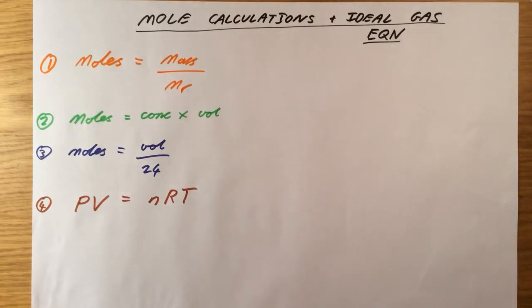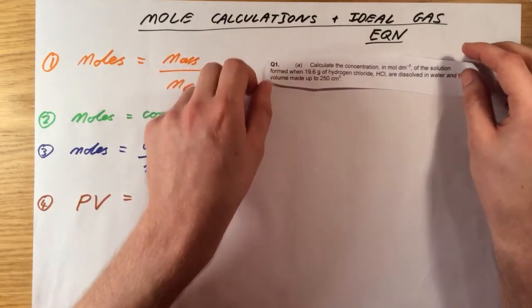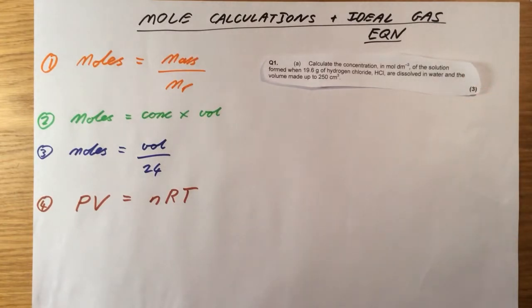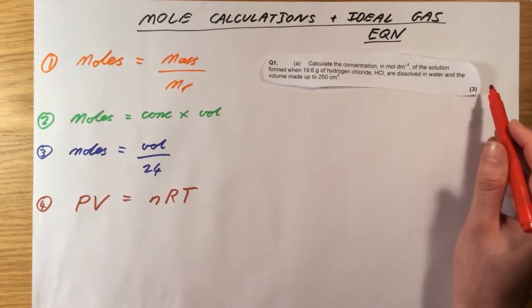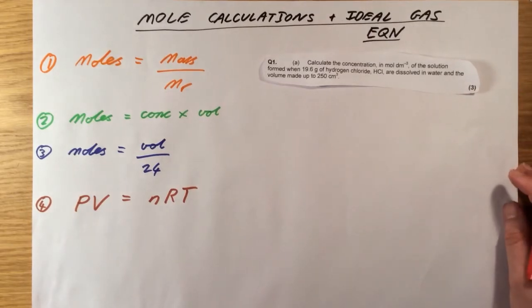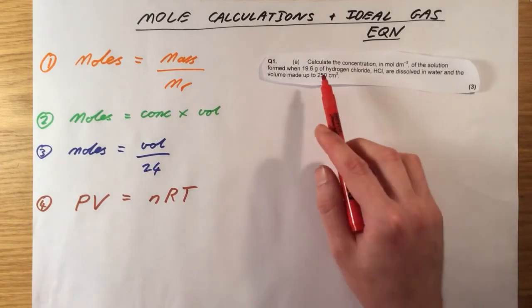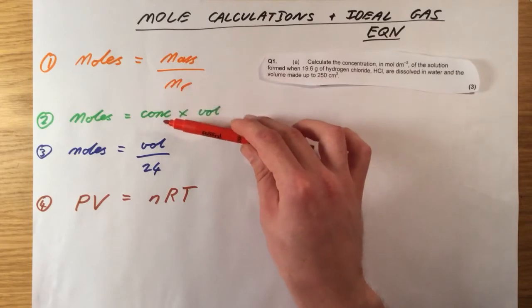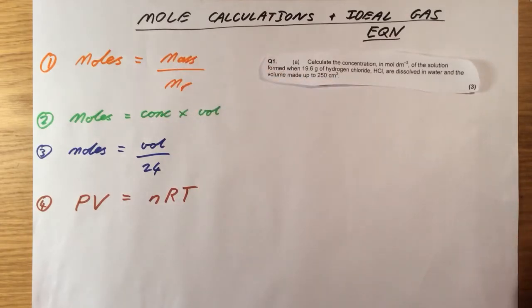Okay, without further ado, let's go through some questions. So our first question here: calculate the concentration in moles per decimeter cubed of the solution formed when 19.6 grams of hydrogen chloride are dissolved in water and the volume made up to 250 centimeters cubed. So the first thing we need to spot here is the number of marks. It's actually a three-mark question. And what that implies to me is it's not going to be a straightforward, simple, single calculation. So what have we got? We've got a mass of hydrogen chloride and then a volume. Okay, there is no formula here with both mass and volume in. So actually, let's break it down. The first thing we're going to do is use formula 1.